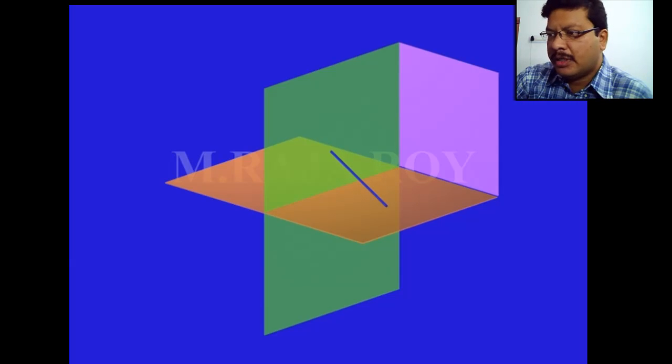Now observe I am projecting the front view. When you are seeing something like this perpendicular to the vertical plane, then front view is obtained in this way on the vertical plane.